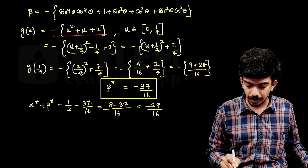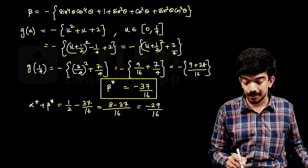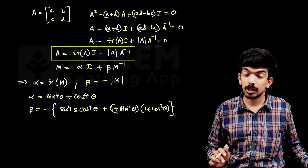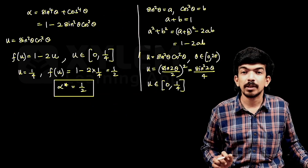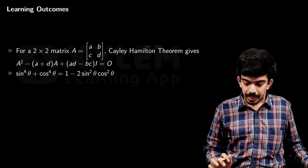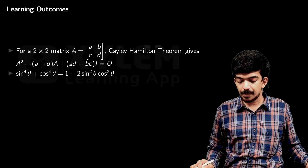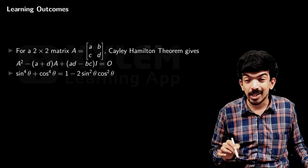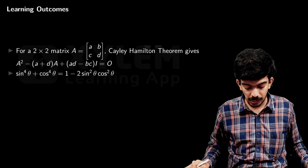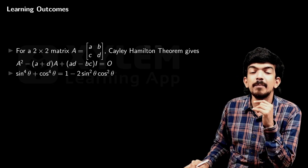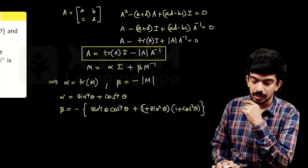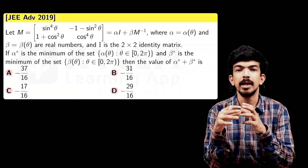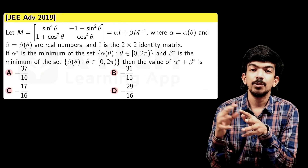Even otherwise, since cos θ and sin θ are symmetric functions, we can verify the result at the symmetric point where sin θ = cos θ. If you have any questions, we will try to do that problem. See you in the next class. Bye-bye.